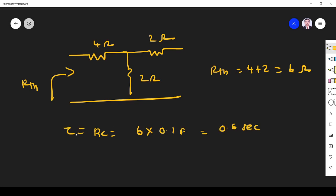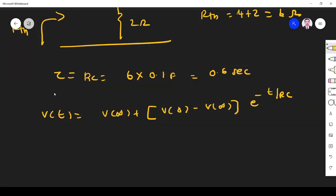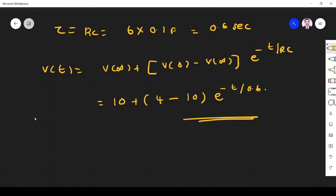So Vc(t) equals V(infinity) plus [V(0) - V(infinity)]e^(-t/RC). What I get is V(infinity) is 10 volts plus V(0) is 4 minus 10, e^(-t/0.6). That equals 10 plus (4 - 10)e^(-t/0.6), which is 10 - 6e^(-t/0.6).